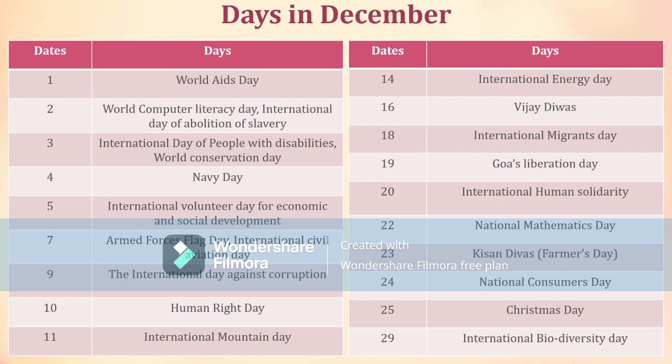December 9th: International Day Against Corruption. December 10th: Human Rights Day. December 11th: International Mountain Day. December 14th: International Energy Day. December 16th: Vijay Divas. December 18th: International Migrants Day. December 19th: Goa's Liberation Day. December 20th: International Human Solidarity Day.